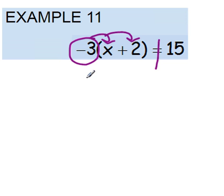So negative 3 times x will give us negative 3x, and then we have negative 3 times 2, which will give us negative 6. All of that will equal 15.